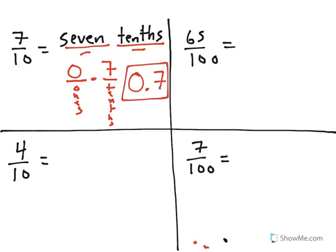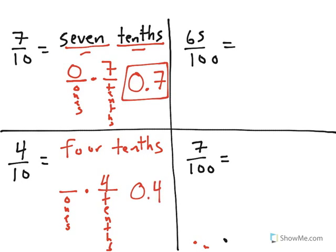The same is true down here. We're going to read this as 4 tenths. Looking at what we just looked at, the ones place has no value because there's no whole number here. And the tenths place, well, it says right there that we have 4 tenths, which is equal to 0.4.